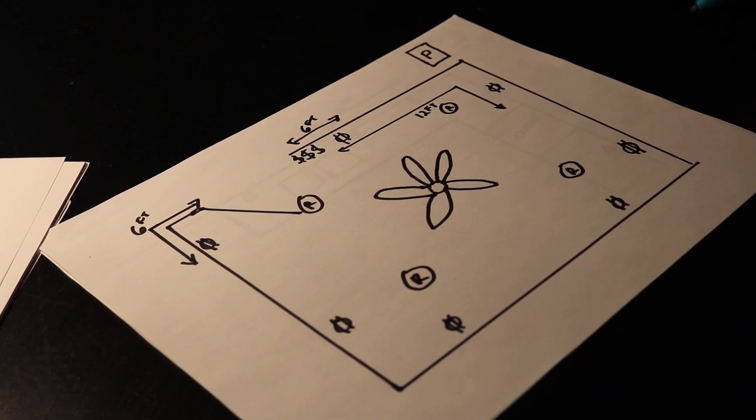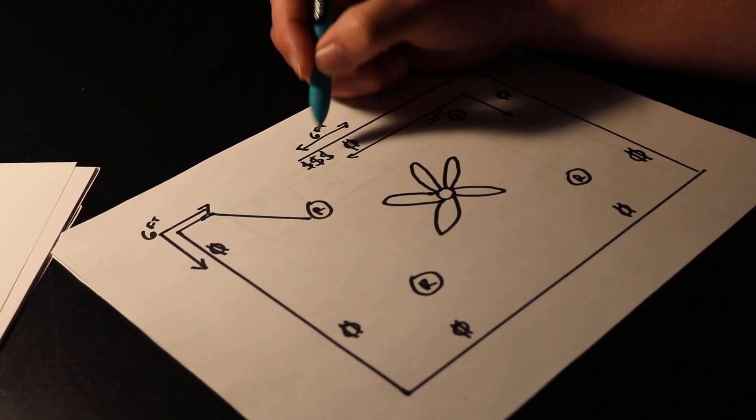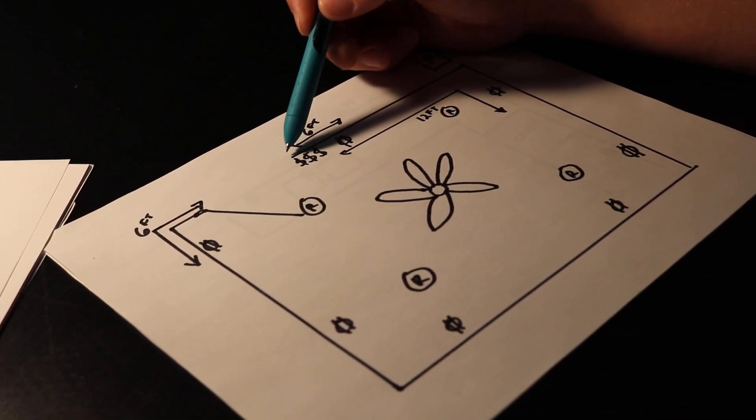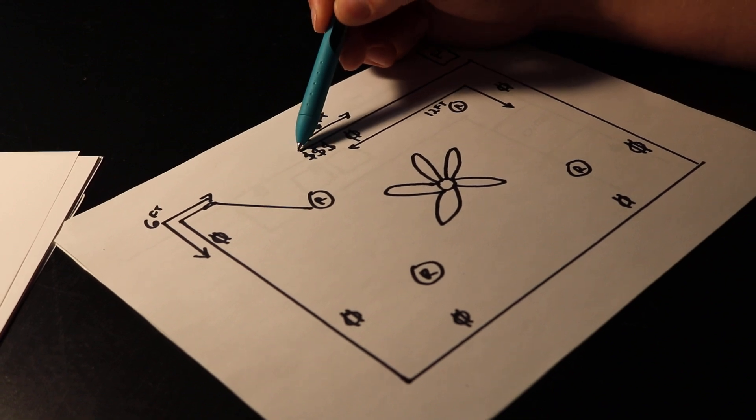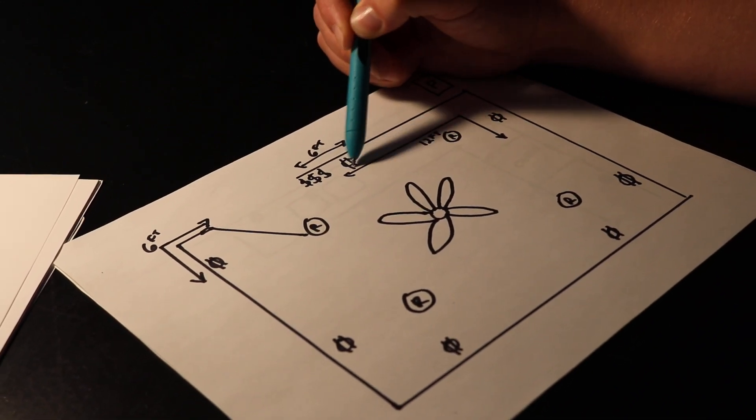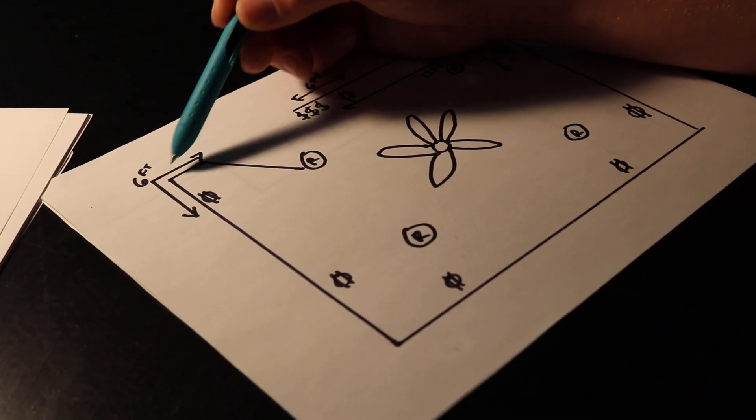First we're going to do the plug spacing. So here's our door right here. From the edge of that door you're going to be required to have an outlet within six foot from the edge of the door. There'll be an outlet and then the same thing on the other side, the other edge, it'll be six foot.